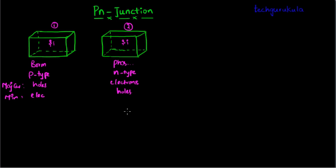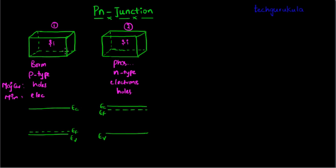Now let us see how the energy band diagrams look for these two pieces of semiconductor material. As both materials are silicon, the energy band gap between EC and EV will be the same — 1.12 electron volts, known as EG. As the first material is P-type, the Fermi level will be closer to the valence band edge EV. For the N-type material, EF will be closer to EC.